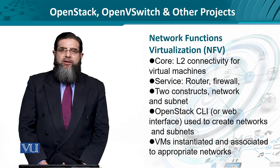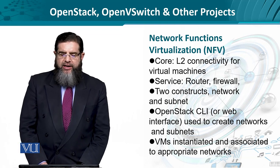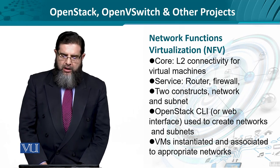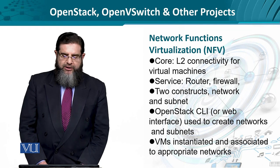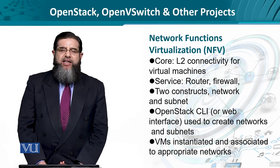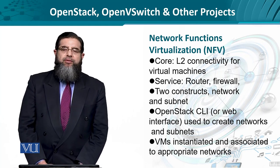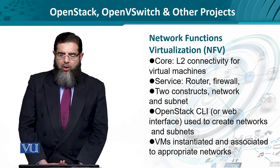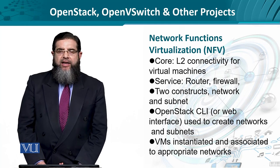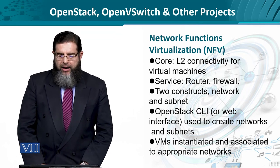Broadly speaking, the functionality can be broken up into core and service. Core deals with the connectivity aspect of virtual machines primarily at layer 2. At the service level, networking devices such as routers, firewalls, etc. are realized. We have basically two constructs: the network and the subnet. Using the command-line interface available in OpenStack, or its web-based equivalent, such networks and subnets can be created. Each subnet or network will have its own virtual machines instantiated, which are assigned or bound to appropriate networks.